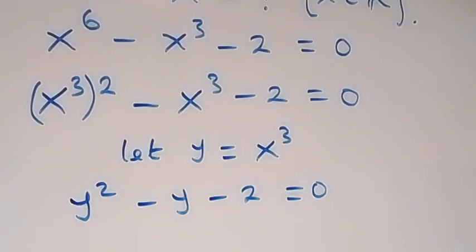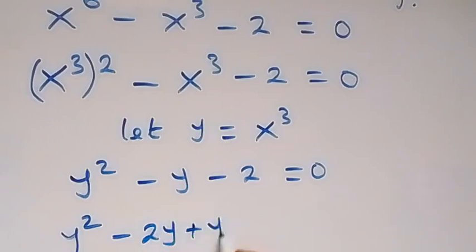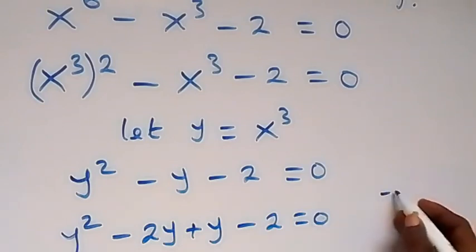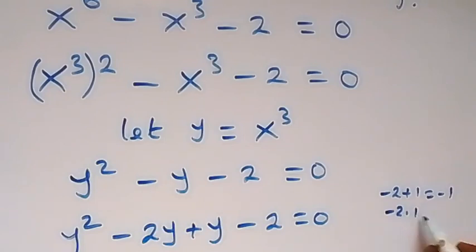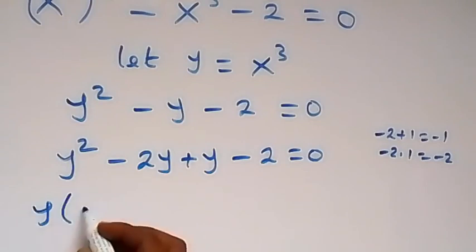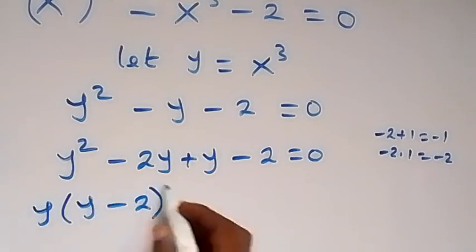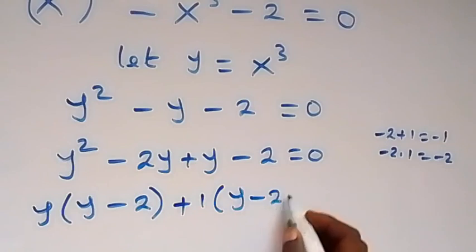From here, we can factorize this by writing y squared minus 2y plus y minus 2 equals to 0. Here, minus 2 plus 1 is the same as minus 1, which is the coefficient here. And also, minus 2 times 1 is the same as minus 2, which is the product here. So from here, we group these. And y is common here, so we have y out into bracket y minus 2. Then what is common here is 1, that's plus 1 into bracket y minus 2, which is equal to 0.